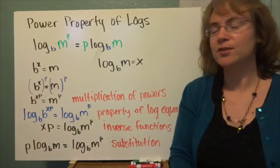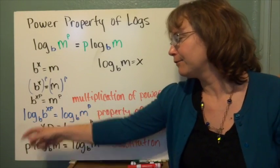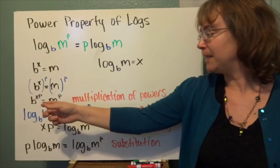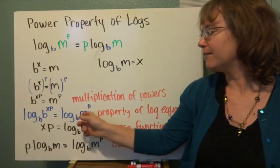Now I'm going to take the log of both sides. I very cleverly chose my base to be b again. So log base b of b to the xp equals log base b of m to the p.